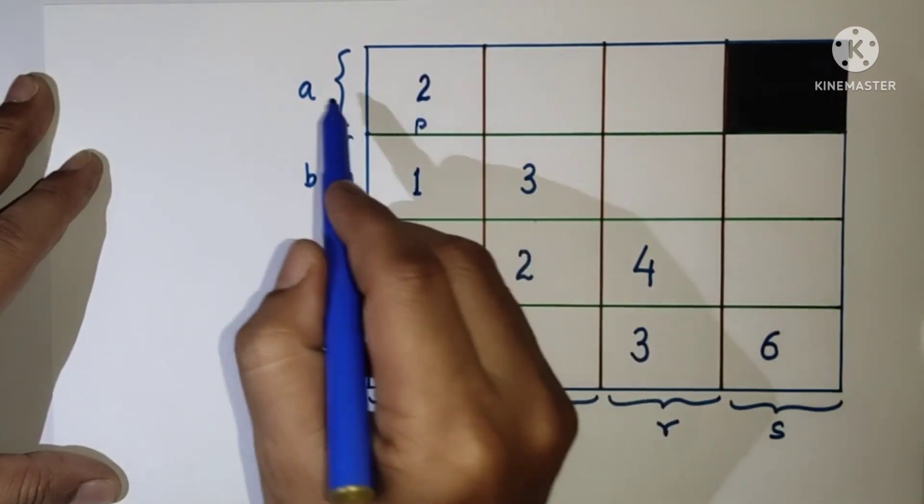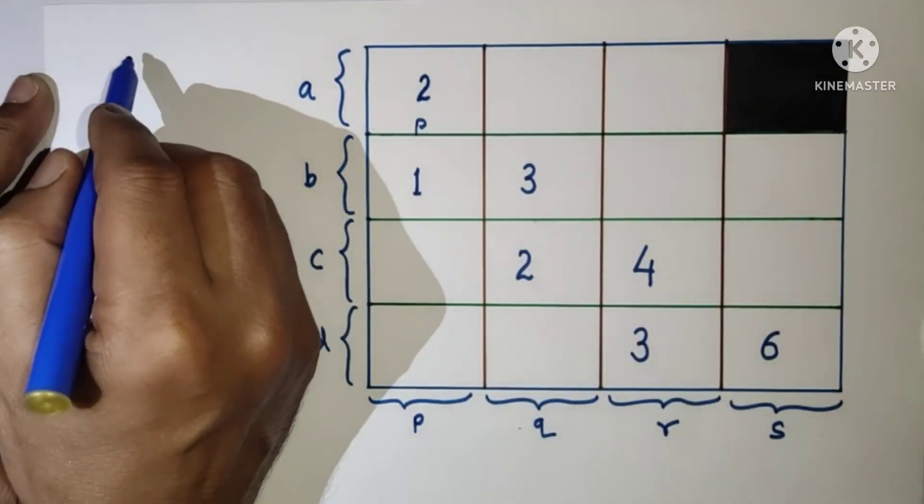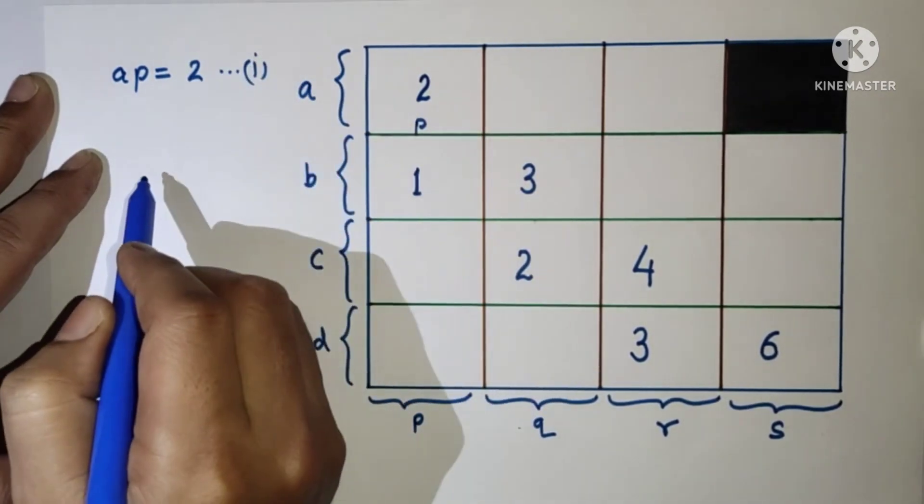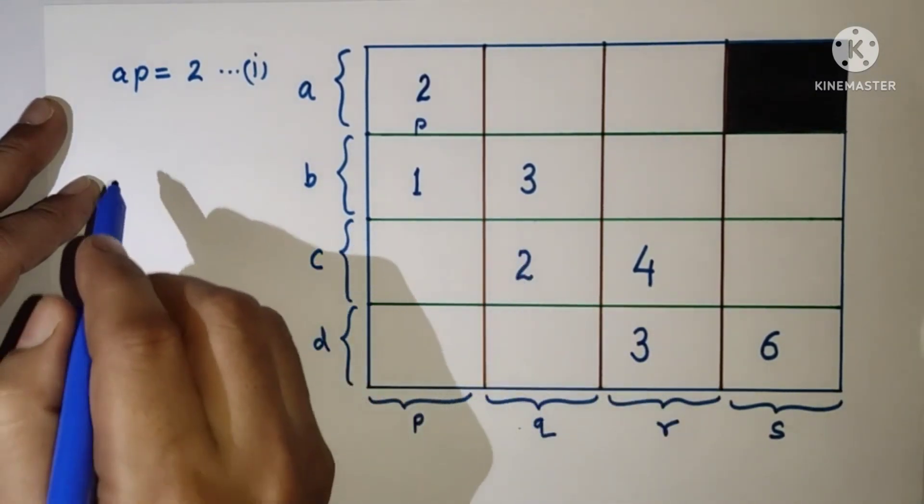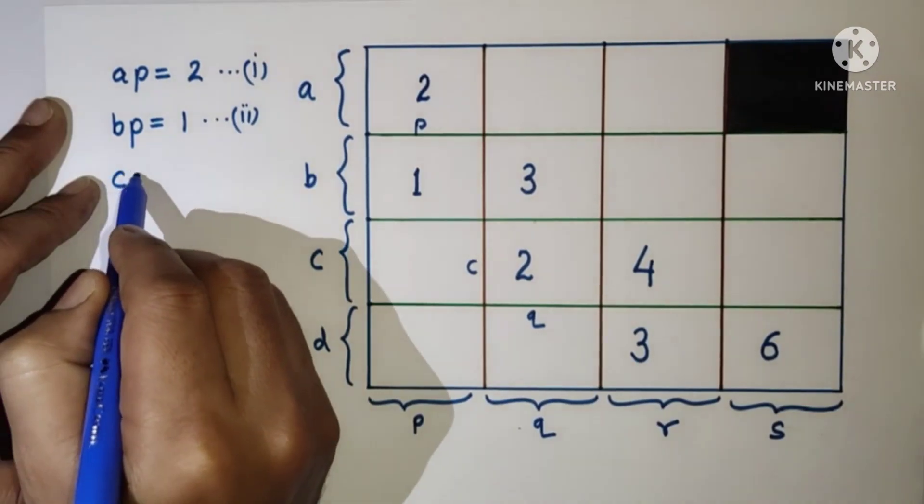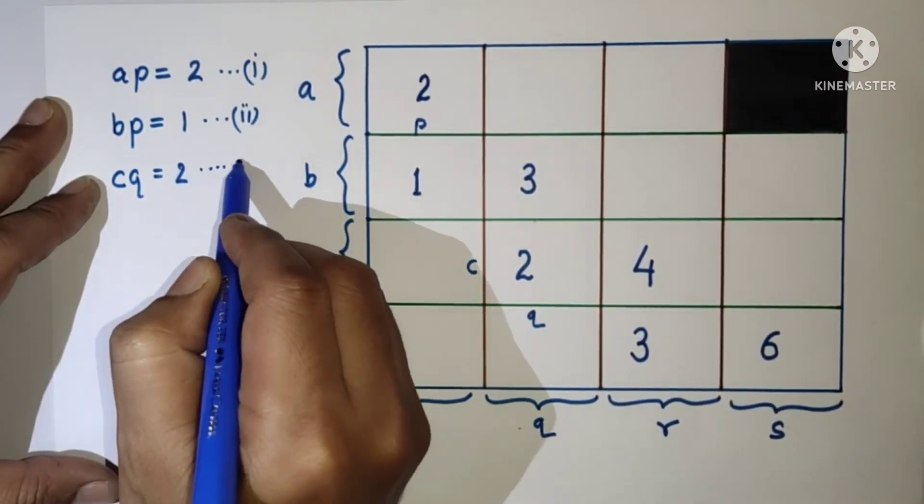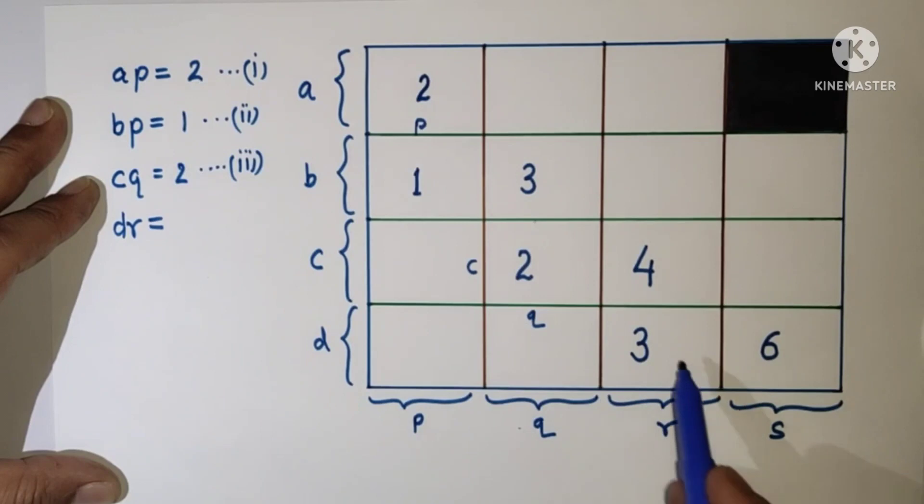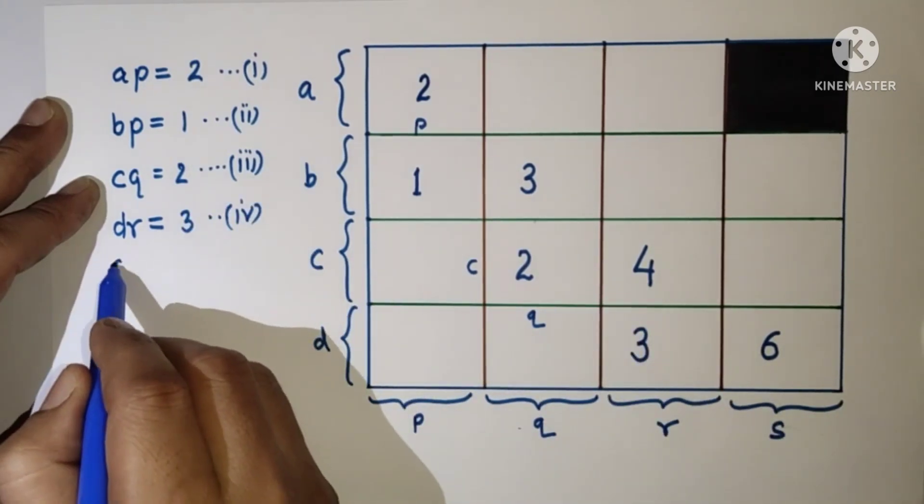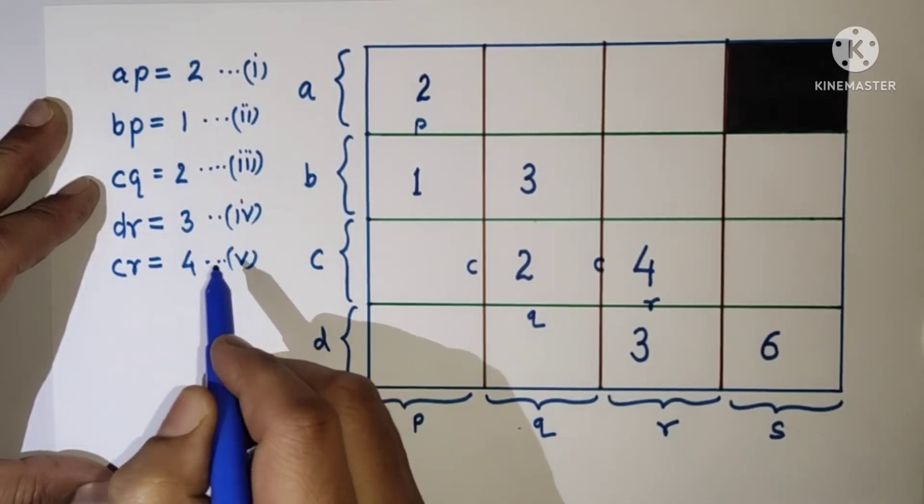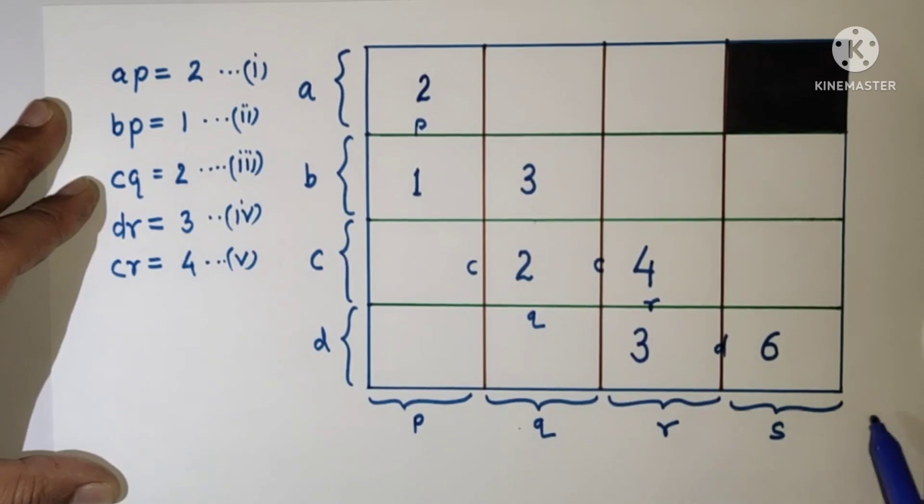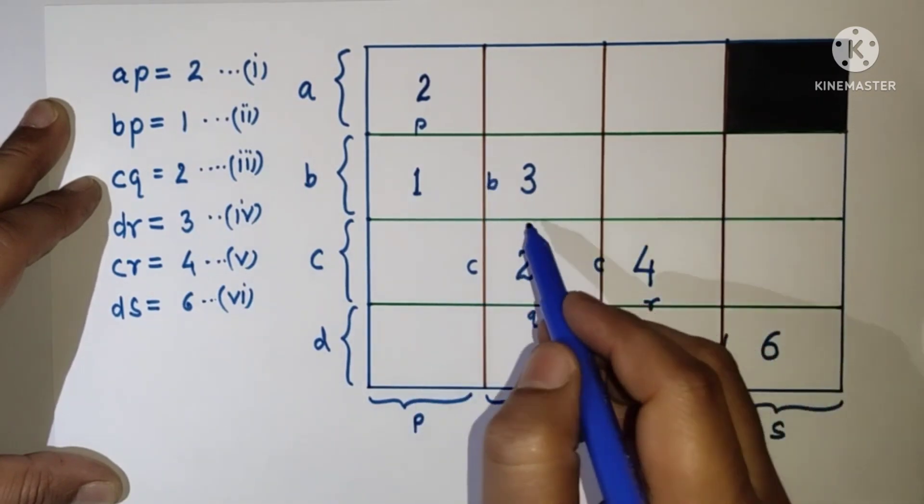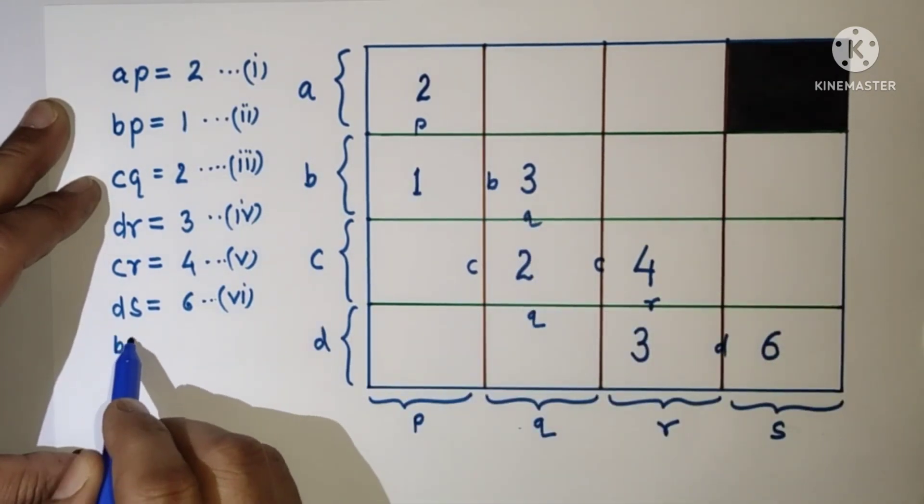So this area is 2, so AP is 2. This is your first equation. Similarly, BP is 1. CQ is 2, so DR is 3, CR is 4. DS is 6. And BQ is 3.